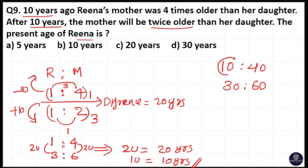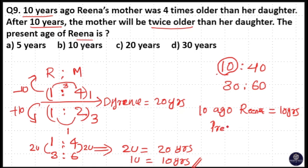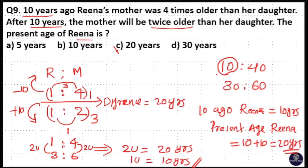So 10 years ago, Rina's age was 10 years. So the present age of Rina is 10 plus 10 years, that is 20 years. So your answer is option C. Always verify this ratio after substituting the unit value.